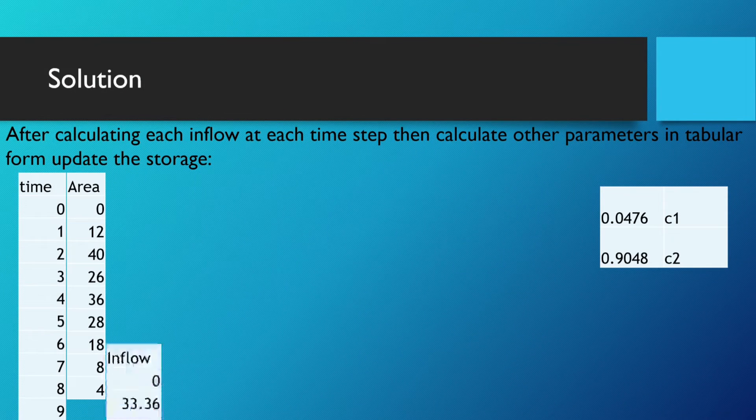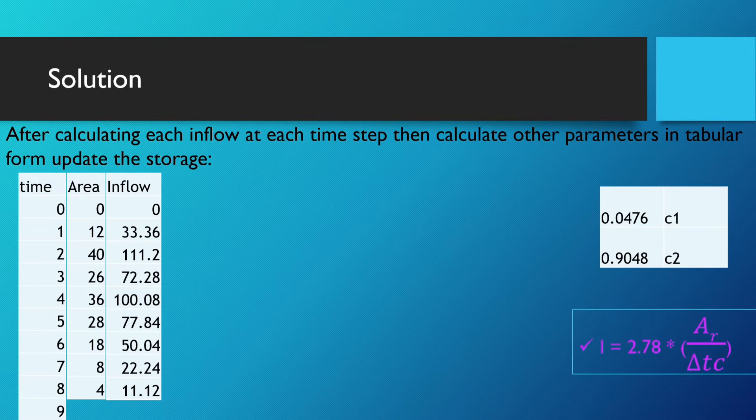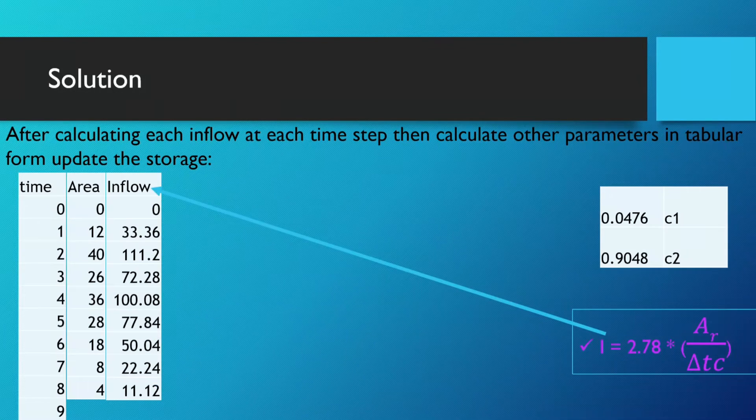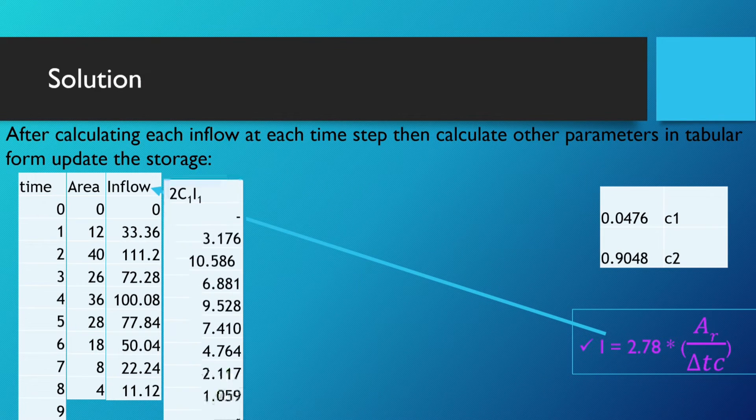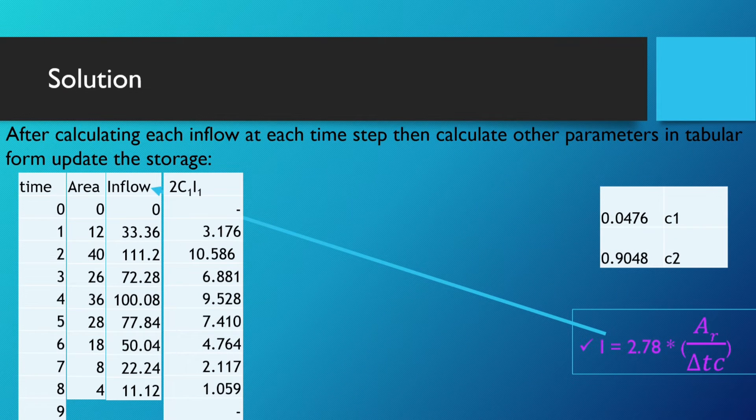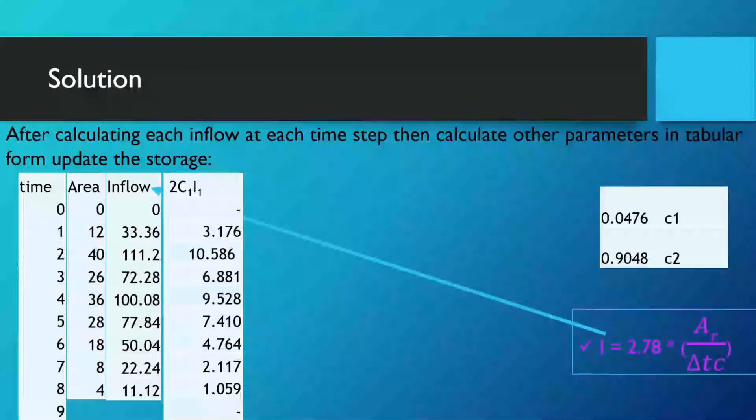Then we will calculate the inflow as we have already discussed: inflow I equals 2.78 times AR by ΔTc. Using this value, we will calculate the inflow. For example, 2.78 times AR, which is 12 for 1 hour, divided by ΔTc. ΔTc is 1 hour already given in the equation. On solving this, we get 33.36. Other values will be achieved similarly. Now after that, 2C₁I₁ shall be calculated and placed in this table. C₁ is already calculated previously and the value of C₁ is 0.0476. On multiplying this C₁ with I₁, we will get the value and that value will be continuously placed in this table.